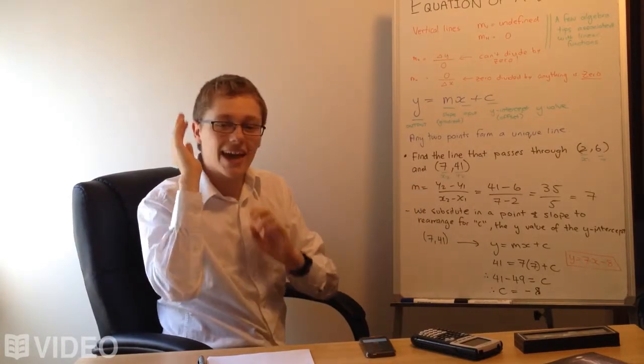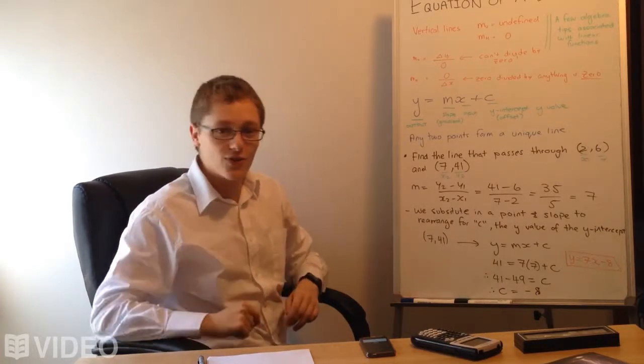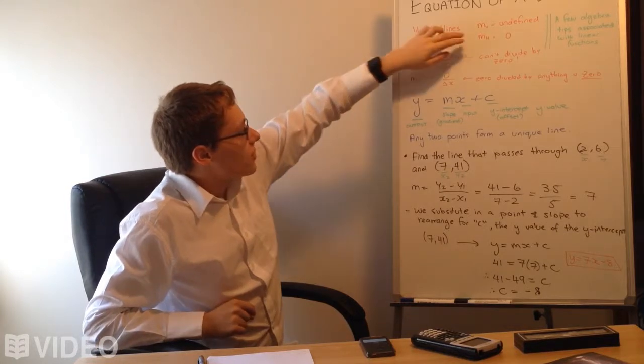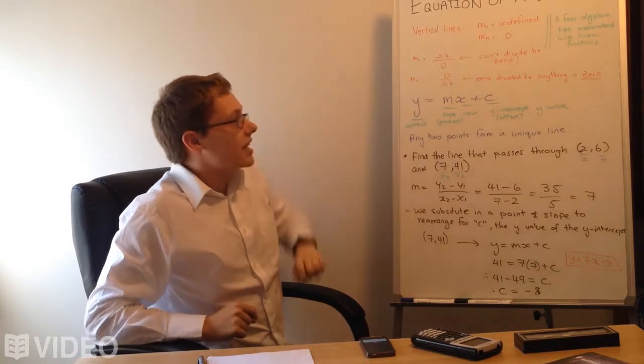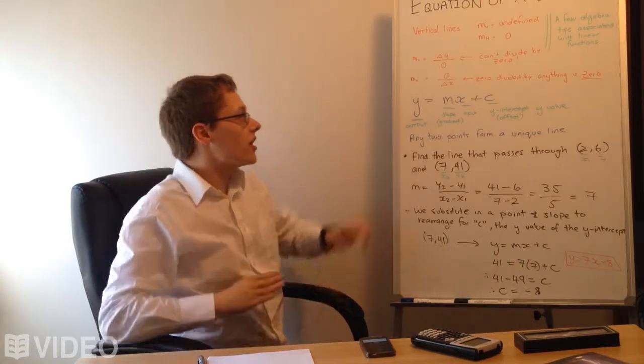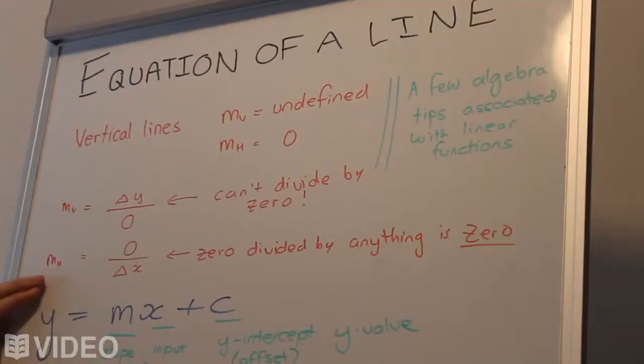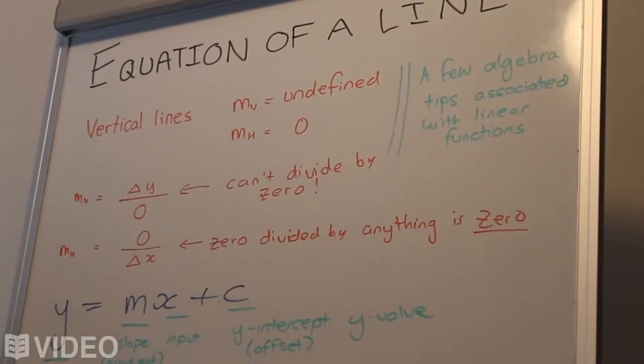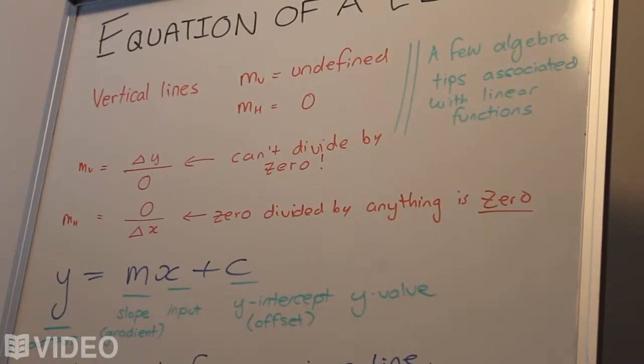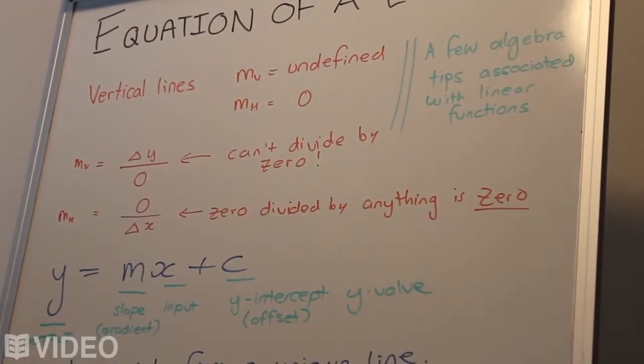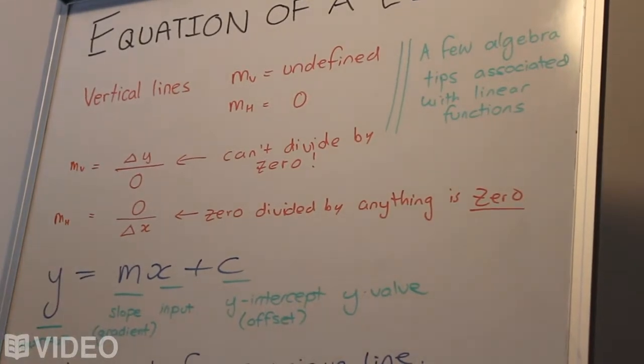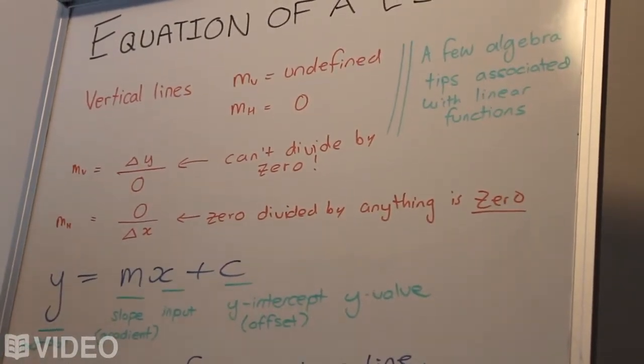We cannot divide by zero. But then we've also got the idea of horizontal lines. If we have horizontal lines, then their slope is zero. The change in y is obviously going to be zero because we have no change in y, but the change in x is just going to be between two points on that horizontal line. As a result, we end up with zero divided by anything, which we know is going to be zero.